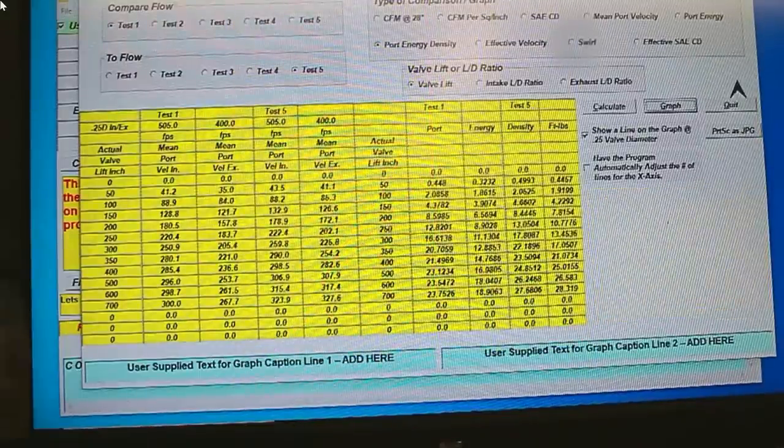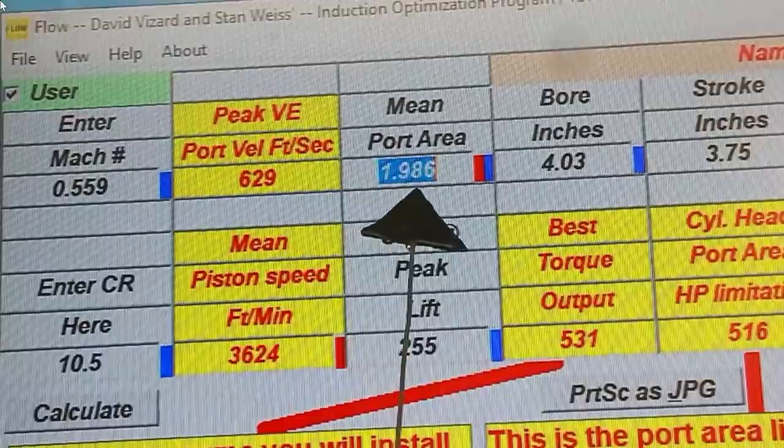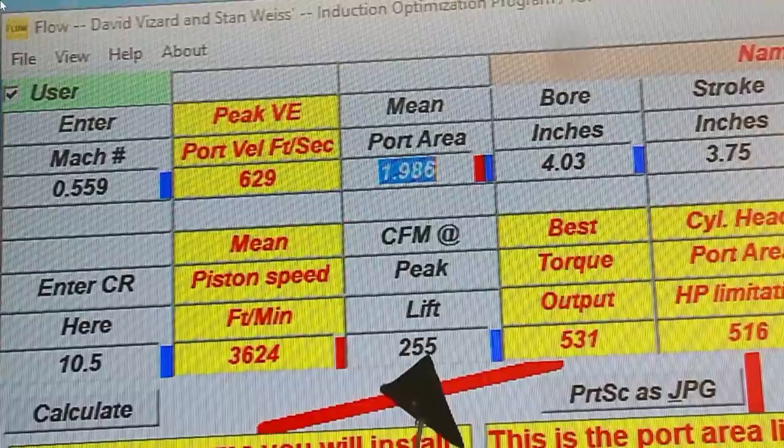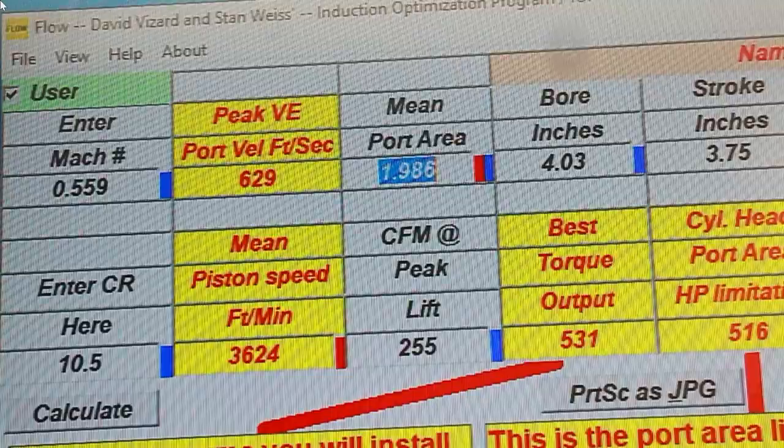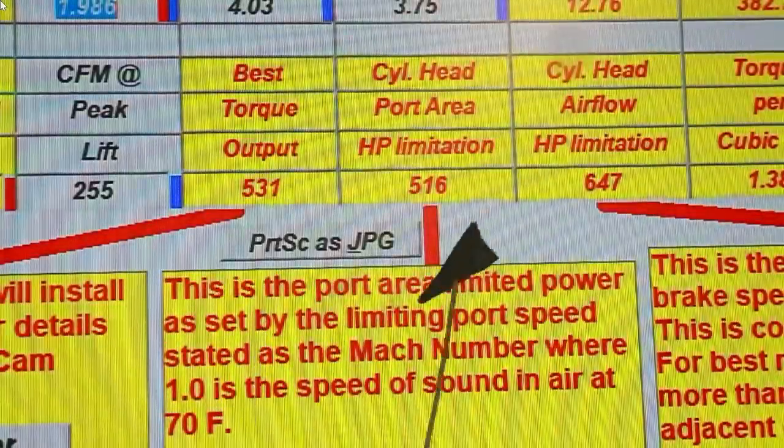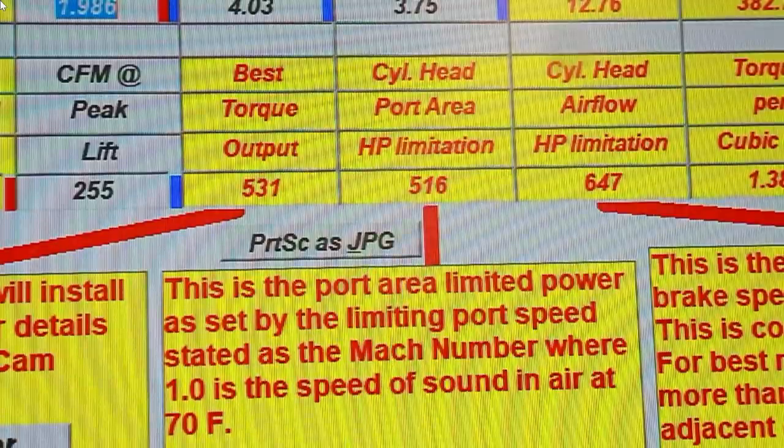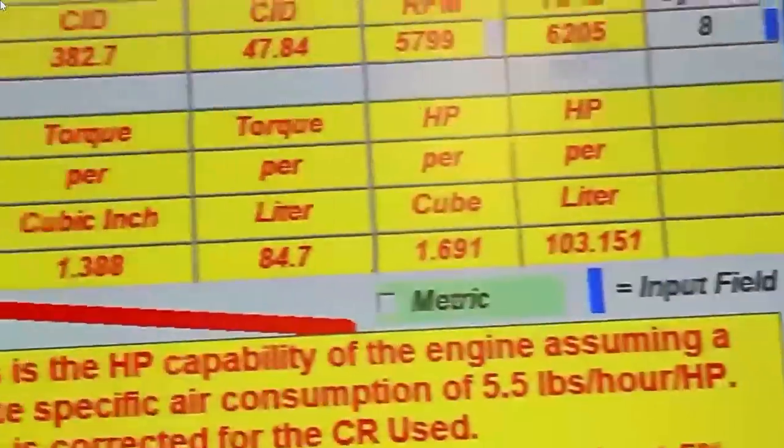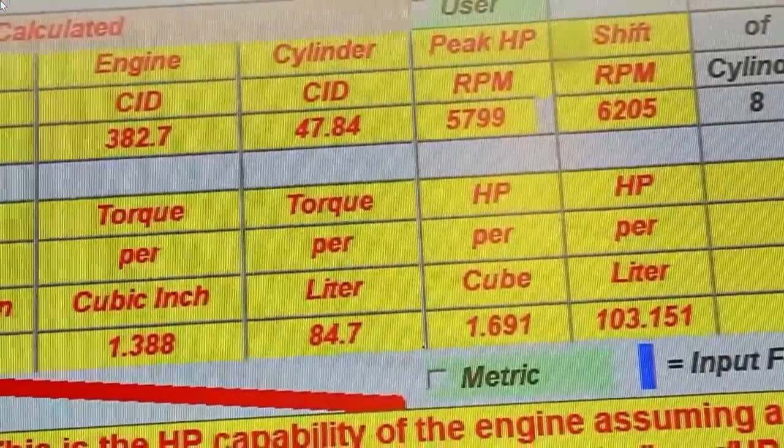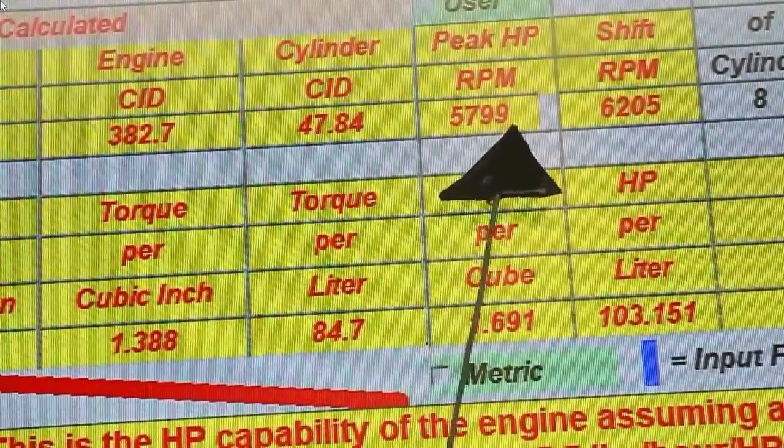But our next move is to see what this is going to produce in terms of power. We have 1.98 square inches. We have 255 CFM at our lift. And what that gives us for our engine is peak torque of 531 foot pounds. Peak power 516 plus. It'll be a bit over that. So we've achieved the horsepower goals, but that's not all. Let's now take a look at the RPM at which peak power will occur. That will be peak power target RPM was 5,800. The program says 5799. I think that's close enough.